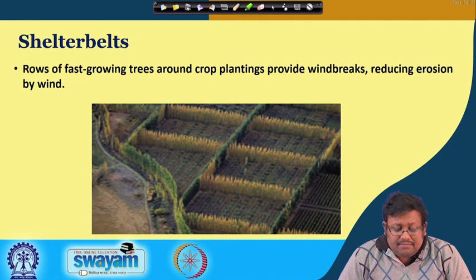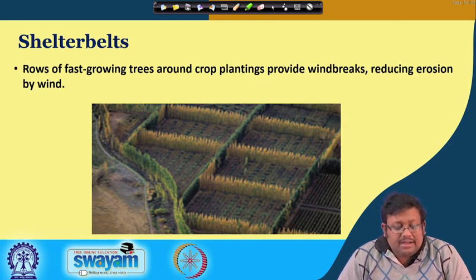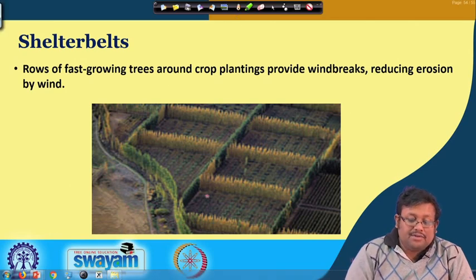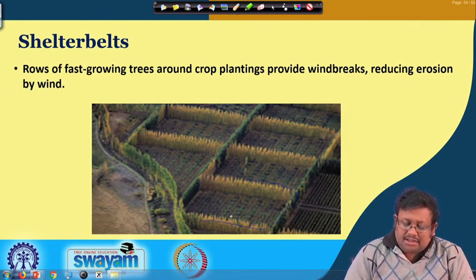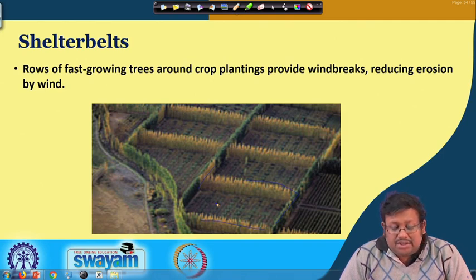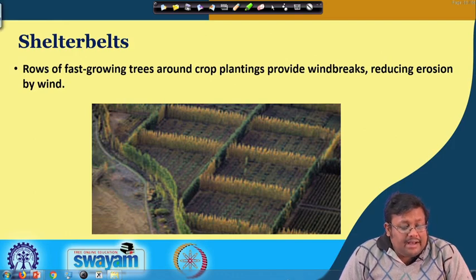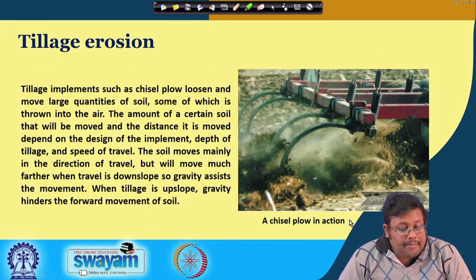The most important way of controlling wind erosion is the shelter belt — rows of fast-growing trees planted around crop fields that provide windbreaks, reducing erosion by wind. Wind faces an obstacle while flowing through the crop field, thereby reducing wind erosion. The shelter belt is the most effective way for controlling wind erosion from crop fields.